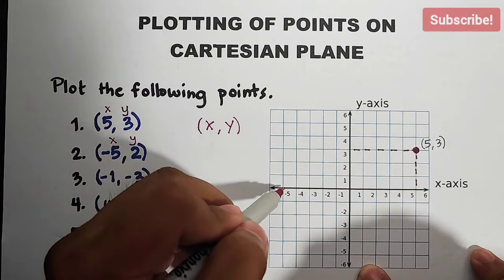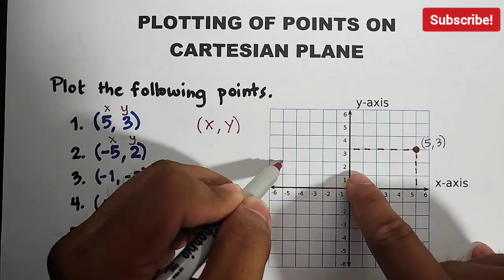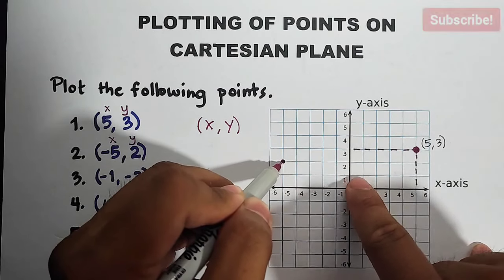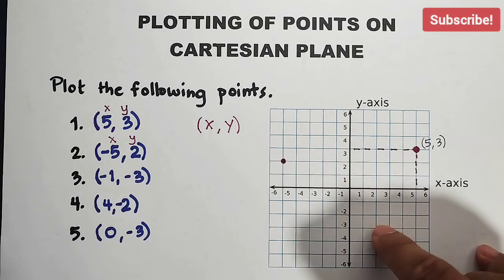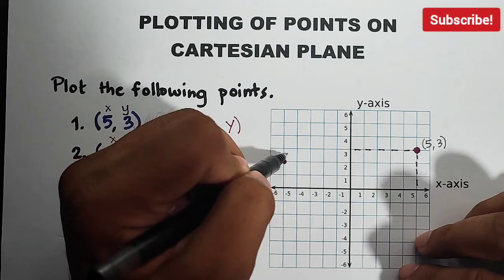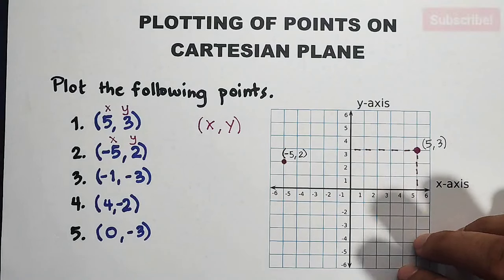So, start with negative 5. Here we are. Negative 5, we'll go up 2 units, 1 and 2, until we reach this. So this is your (-5, 2). Let's put the label. Negative 5 comma 2. Okay.